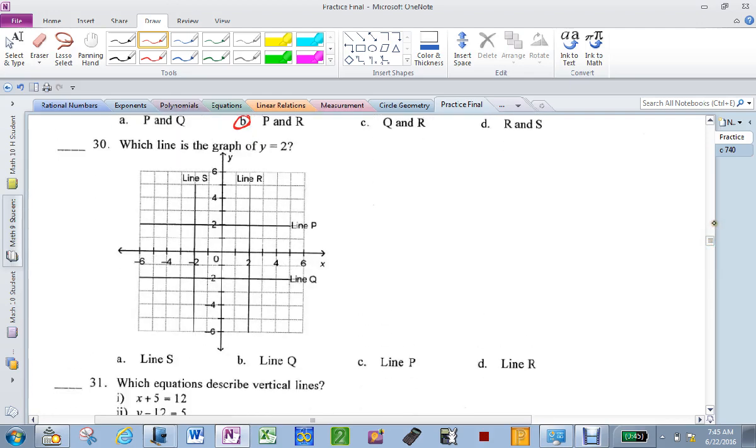Which line is y equals 2? Well, there is y equals 2. There's only one line going through it. It's line p.